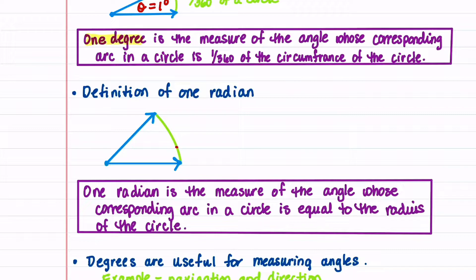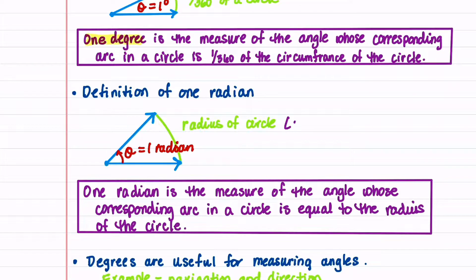Here's how we define a radian. If theta, our angle, is equal to 1 radian, then we say that its corresponding arc is the radius of the circle. We can denote each of these as letter R — the initial ray is R and the terminal ray is R — because our angle is tracing out a circle. So 1 radian is the measure of the angle whose corresponding arc in a circle is equal to the radius of the circle.